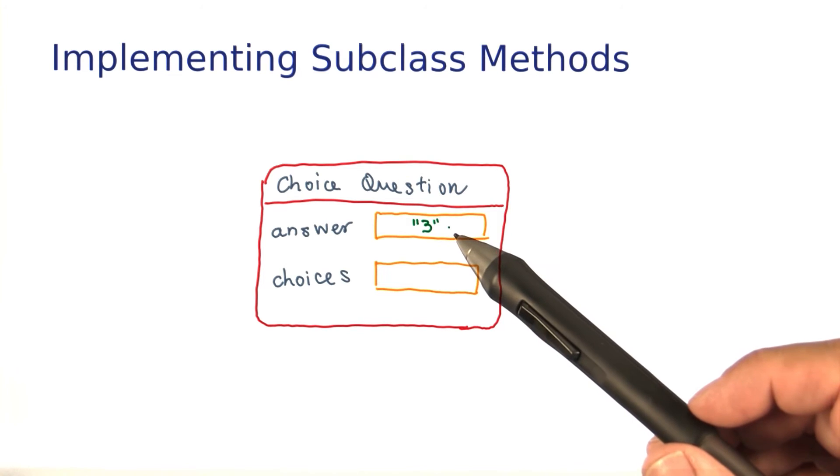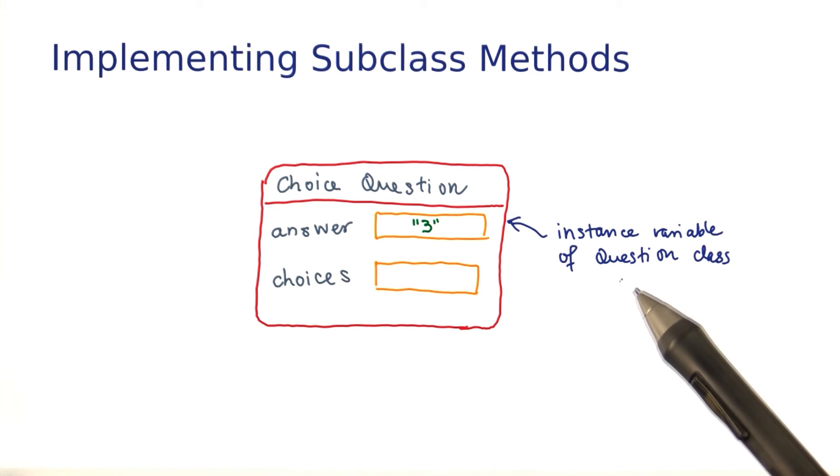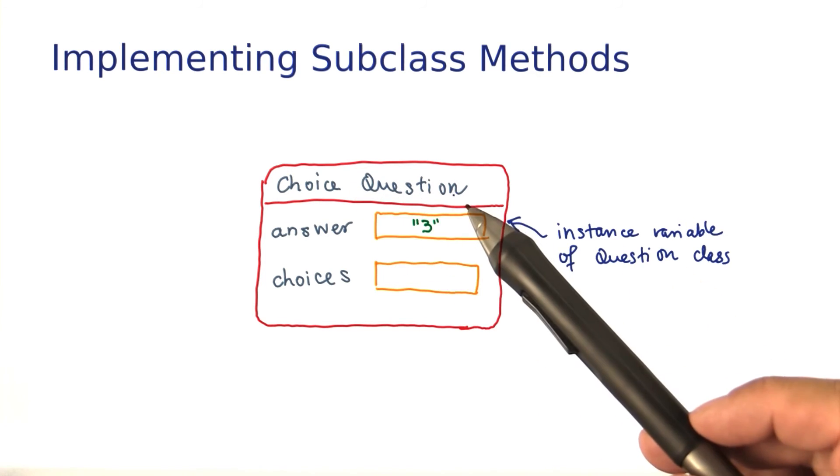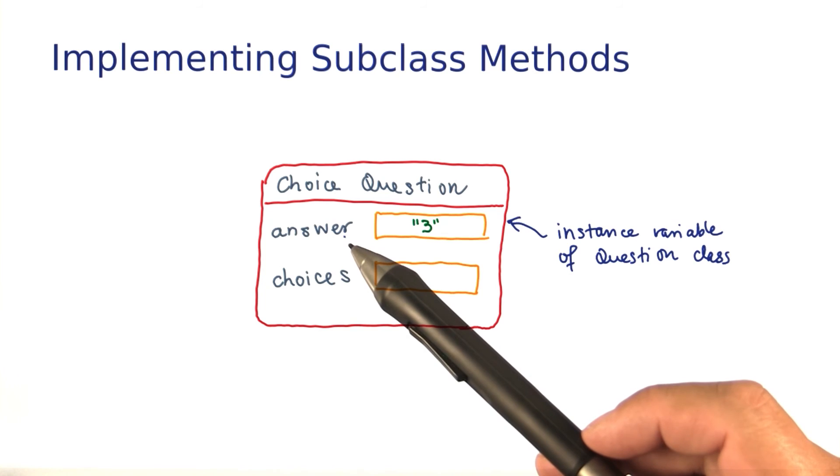You will want to set the answer to a string, such as the string 3, but how can you get at it? The answer is an instance variable of the question class, and it's private. No one can access anything private in the question class except the methods of the question class themselves. Choice question extends question, but that doesn't give it any special privileges. It cannot access this instance field any more than anyone else. So that's the challenge you need to overcome.